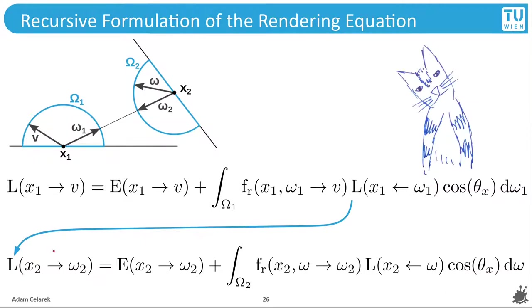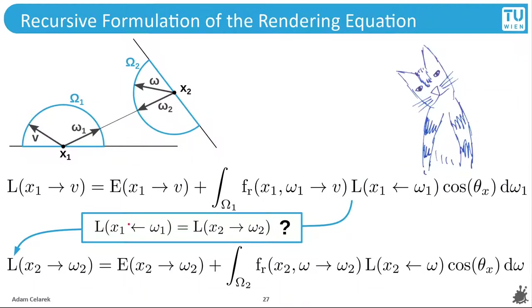This is one expansion of the recursion. We are standing at position x and want to know how much light is coming from direction omega, which represents the whole hemisphere. From a mathematical standpoint we integrate over the whole hemisphere — not a finite number of rays. However, in the spirit of Monte Carlo we can trace a ray into direction omega_1 to see what is there. We hit a point x2 and compute the exitant radiance for omega_2, which is negative omega_1. But here we have incoming radiance while there we have exitant radiance — is that the same?